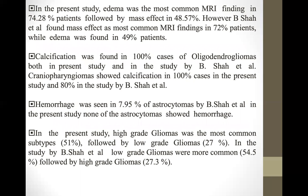In my study, edema was the most common MRI finding followed by mass effect, whereas in the study conducted by B. Shah, mass effect was more predominant compared to edema. Calcification was seen in all cases of oligodendrogliomas in both studies. Hemorrhage was seen in 8% of astrocytomas by B. Shah, whereas none of the astrocytomas showed hemorrhage in my study.